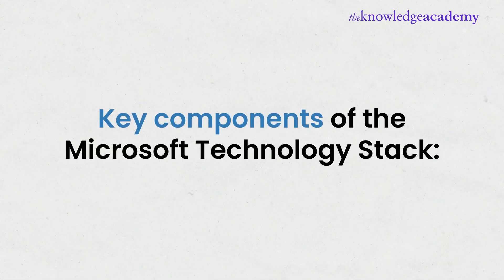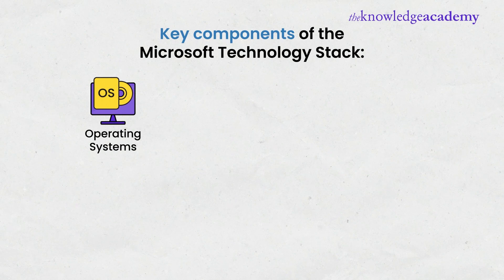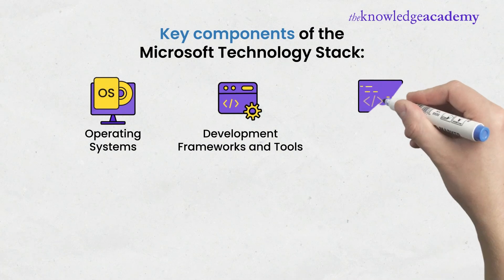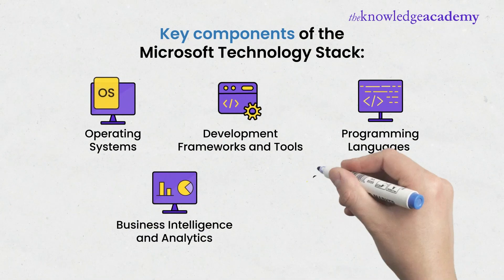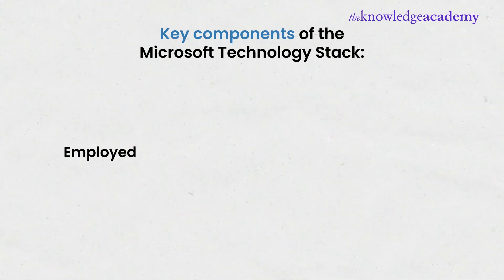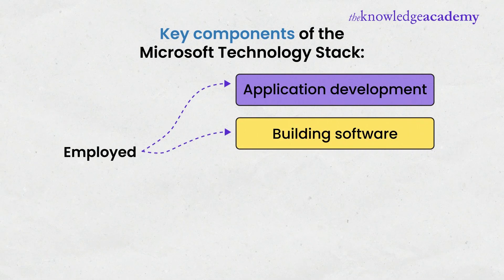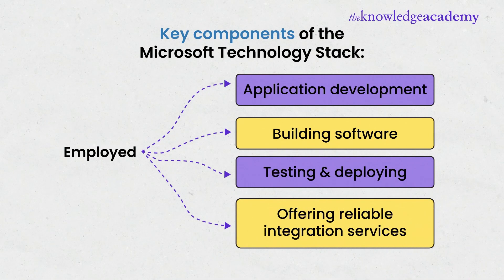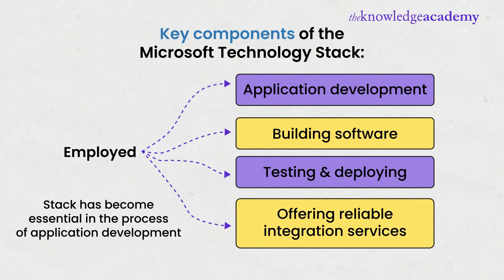Here are some key components of the Microsoft Technology Stack: Operating Systems, Development Frameworks and Tools, Programming Languages, Business Intelligence and Analytics, and Security and Identity Management. It is employed for Application Development, Building Software, Testing and Deploying, and Offering Reliable Integration Services. The stack has become essential in the process of application development.